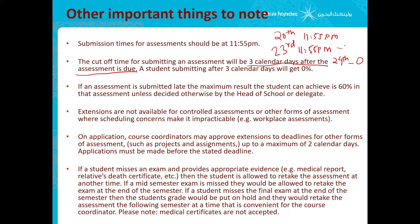The penalty for submitting late: if you submit on the 21st, you only get a 60% grade. Even if you score 100 on the assessment, you would still only get 60 marks because the penalty is that you get 60% of the grade that you achieve. This applies unless you have a valid reason with an extension. If you submitted late without informing anyone, that's the penalty for late submissions.